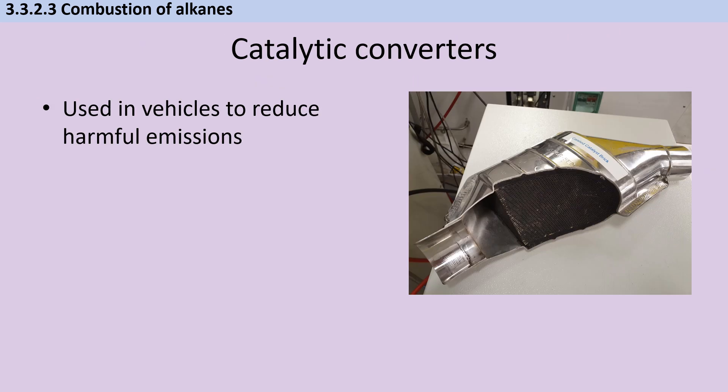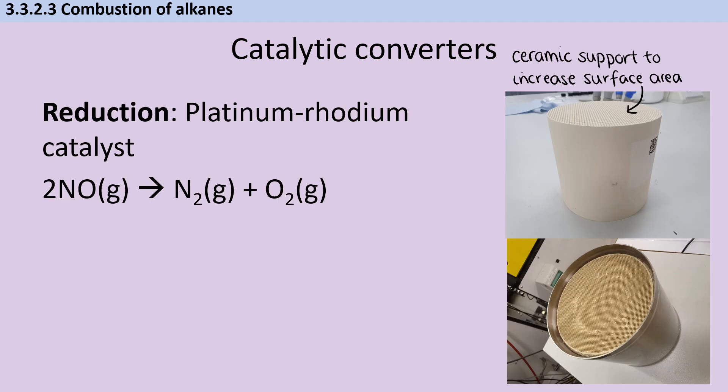All modern vehicles now contain catalytic converters in order to reduce the harmful emissions coming from the exhaust pipe. Modern catalytic converters consist of a support or honeycomb structure made from ceramic. And this provides a wide surface area, which can then be sprayed or painted with a paste that contains tiny microparticles of metals like platinum or rhodium. These have a very high catalytic activity and allow the gases to be broken down into less harmful products.